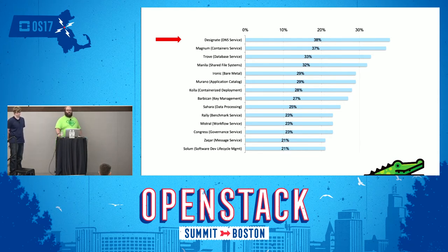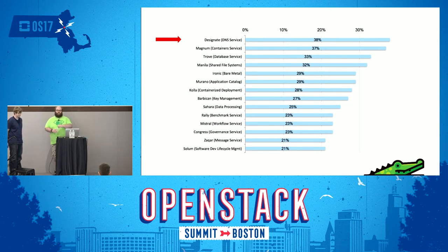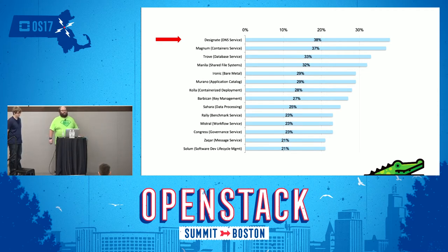There is definitely demand for Designate. Users want it. Traditionally in enterprises, anyone who's worked there has memories of trying to get things updated via service tickets — it can take more than a week to get a record created or updated. With Designate, allowing users to have direct control lets them cycle through quickly. If we let people create VMs at will, we should also allow them to point traffic to those VMs.